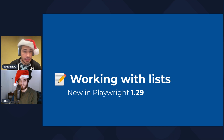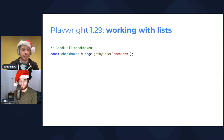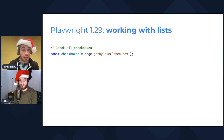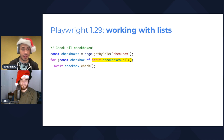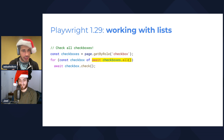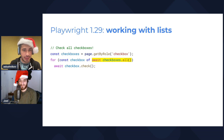Next up: working with lists. This one is very simple. Say, for example, you want to check all the checkboxes on the page. You can now do a loop over checkboxes.all. This new method returns a real array of locators — not a NodeList like querySelectorAll — a proper JavaScript array. So you can iterate directly over all matched elements.